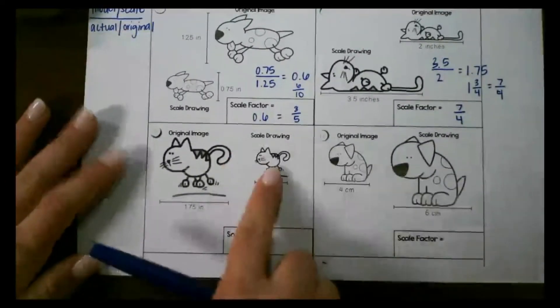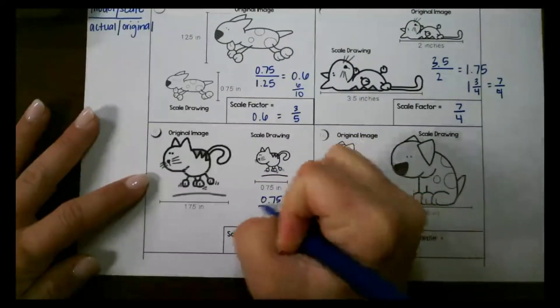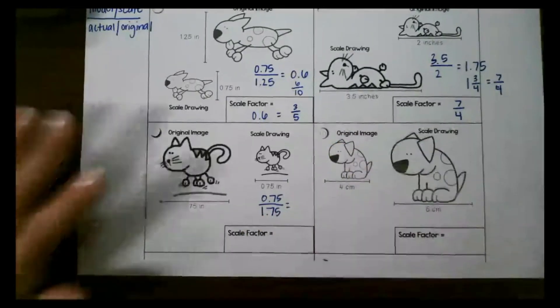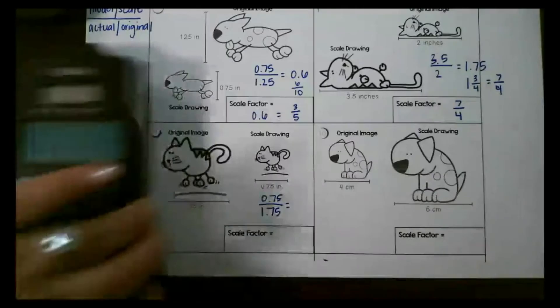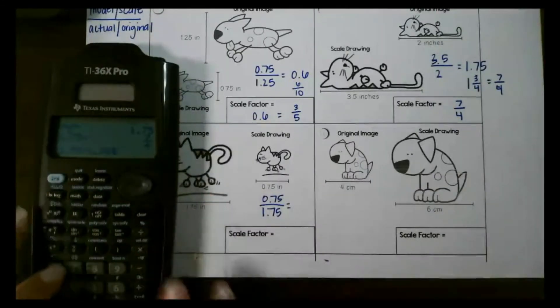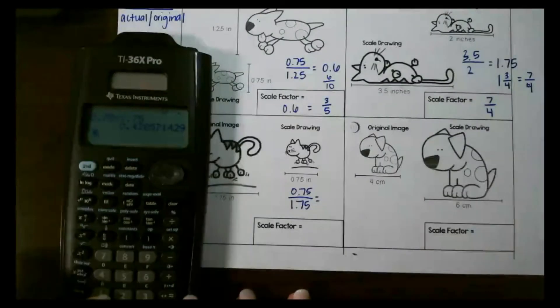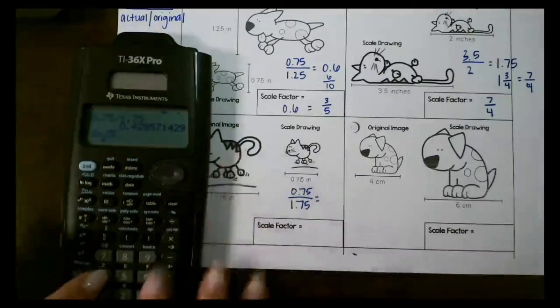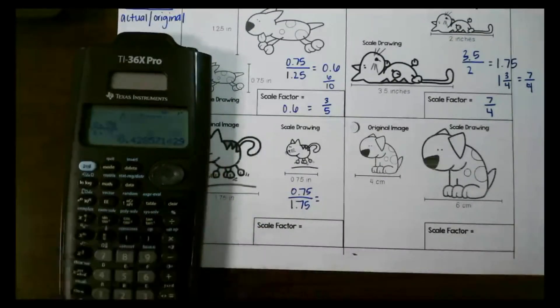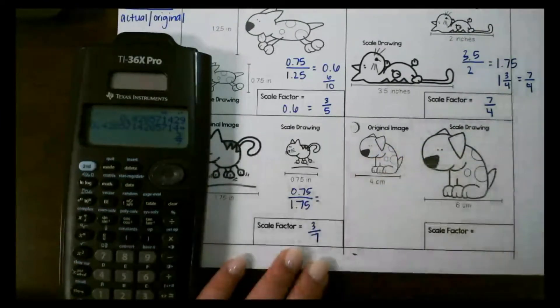Looking at the next one we have the scale is 0.75 and the actual or the original is 1.75. So this time again we plug it into our calculator. I plug it in as division. It's going to give me a big long decimal so then I'm going to use that fraction function 0.75 over 1.75 and then I'm going to use that conversion button which is going to convert it to 3 sevenths.